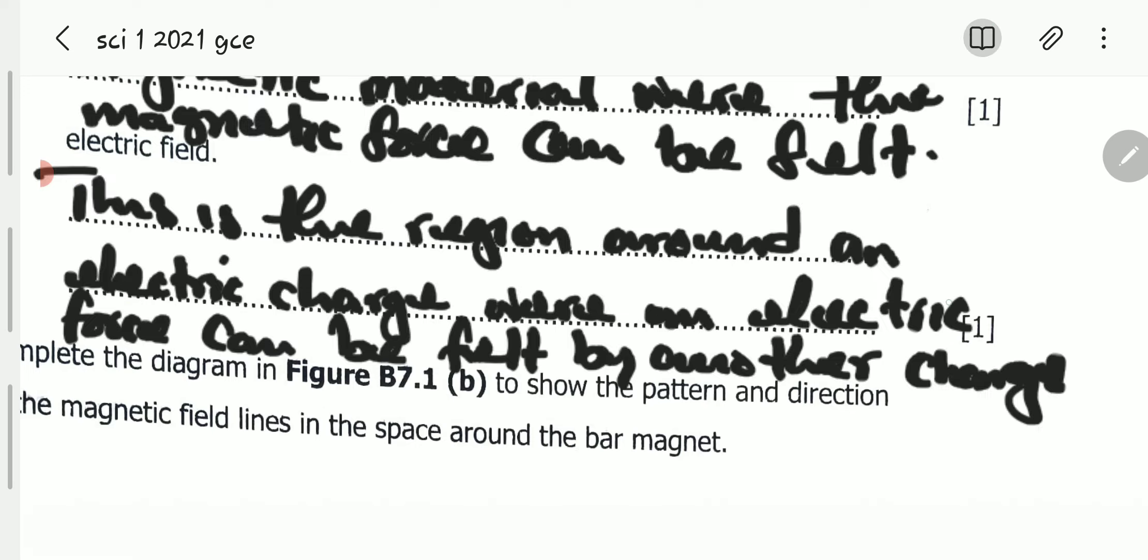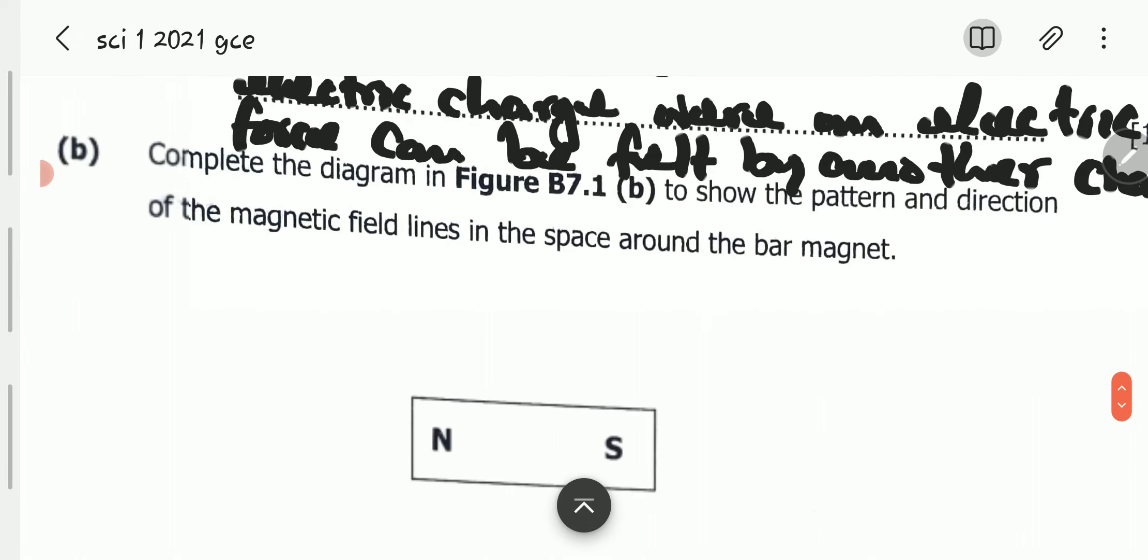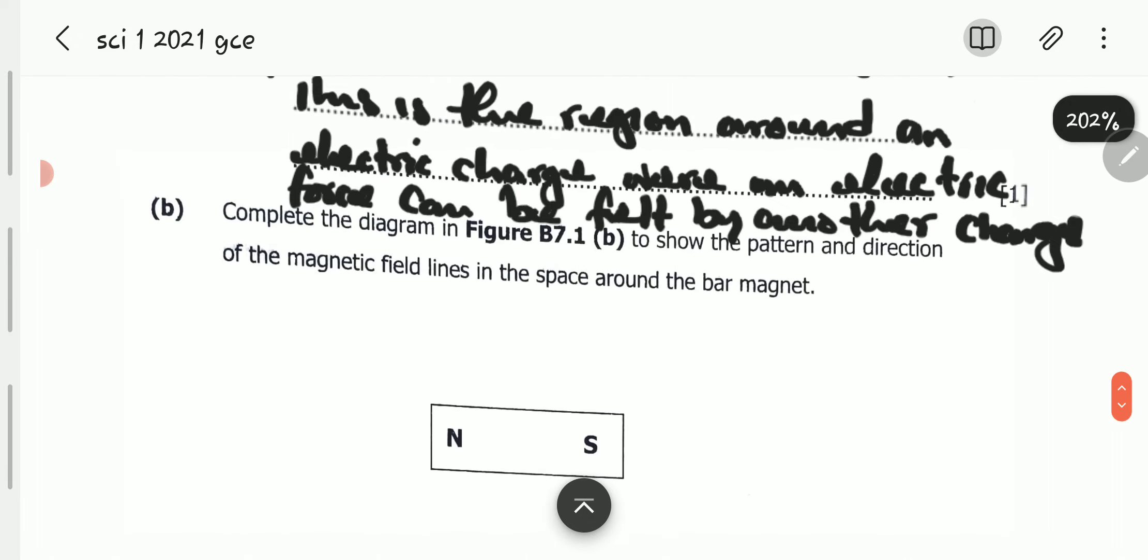We go to part B. Part B is saying: complete the diagram in Figure B7.1(b) to show the pattern and direction of magnetic field lines in the space around the bar magnet.